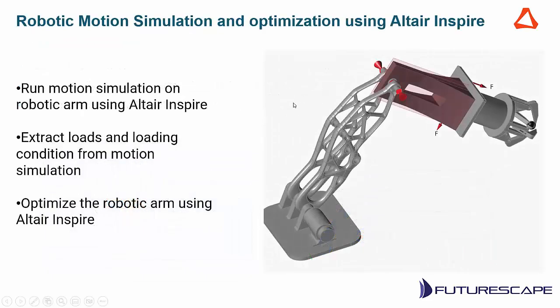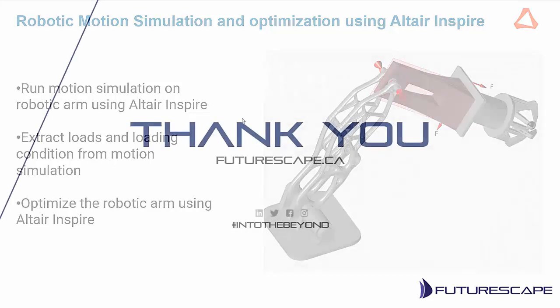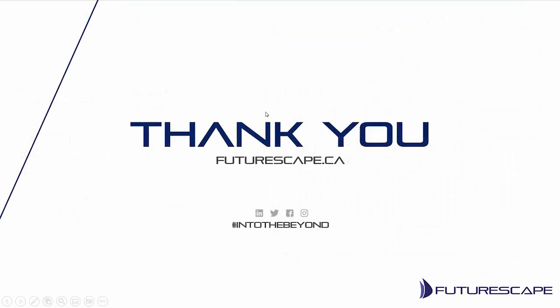The idea behind robotic simulation and optimization in Inspire is you can run the simulation for motion inside Inspire, extract load conditions, and then optimize the robotic arm. For example, arms can have a lattice or structural element giving them a lightweight appearance — those shapes came up using Altair Inspire. Now I'll hand it over to the application engineer to demonstrate how to use this software approach to come up with more efficient robotics and identify areas that could be improved.